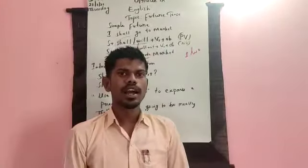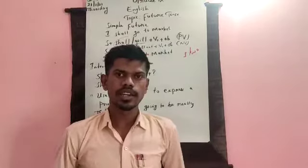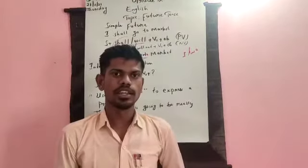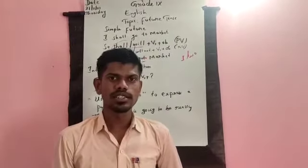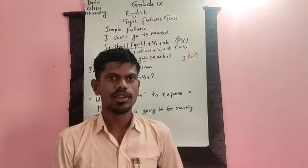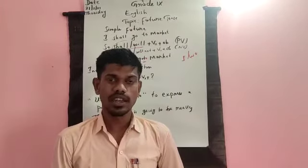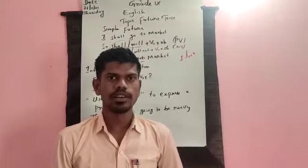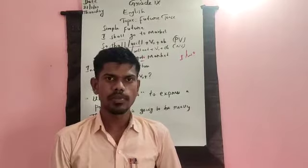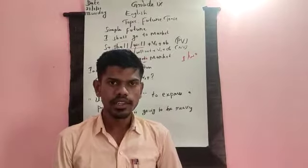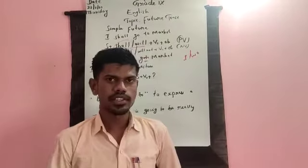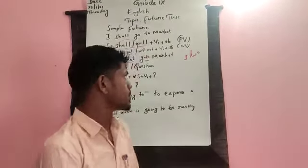A few more negative examples: 'I shall not do my homework.' 'I shall not disturb the class.' 'We will not write the homework.' 'We will not play cricket.' These are examples you can use for simple future negative.